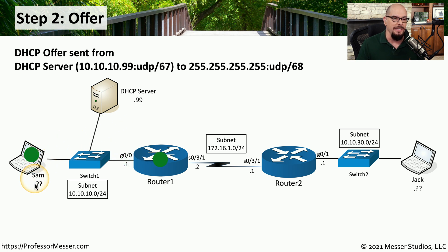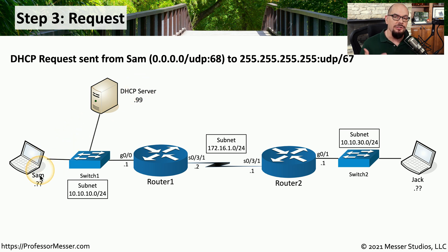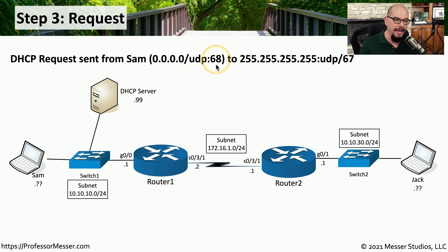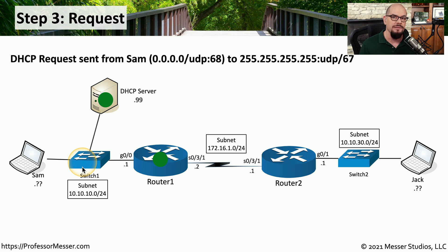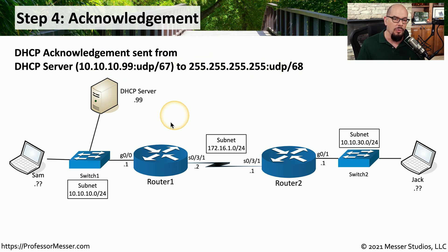The Offer message is received by Sam's device because it was sent to all devices on the local network. Sam has now received the Offer message from the DHCP server, which contains an IP address configuration Sam can use. But before Sam can use that IP configuration, a DHCP Request message is sent from Sam's workstation at 0.0.0.0 port 68 over UDP, to an all-ones broadcast at UDP port 67, saying the offered IP address looks good and Sam would like to use it. The final step is the DHCP server sending a DHCP Acknowledgement message from the DHCP server to an all-ones broadcast over UDP port 68. At this point, Sam's workstation configures itself with the IP address that was originally sent in the Offer and ultimately acknowledged in step four.